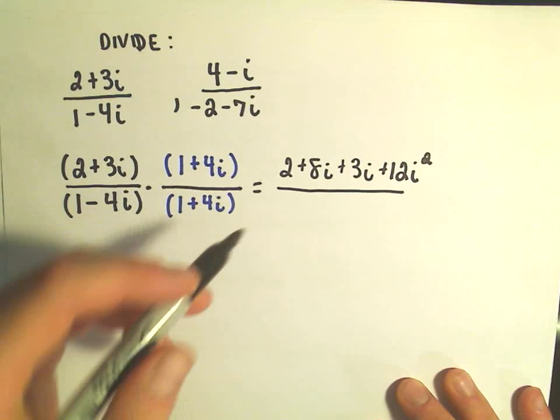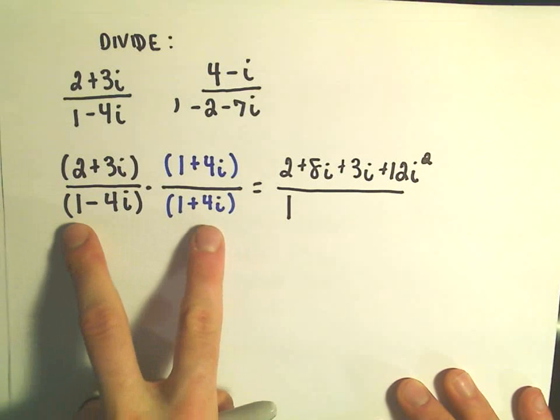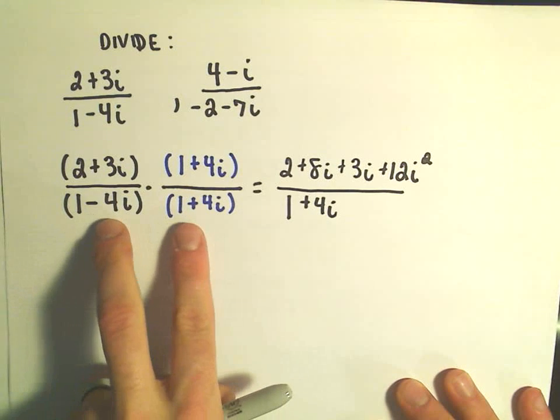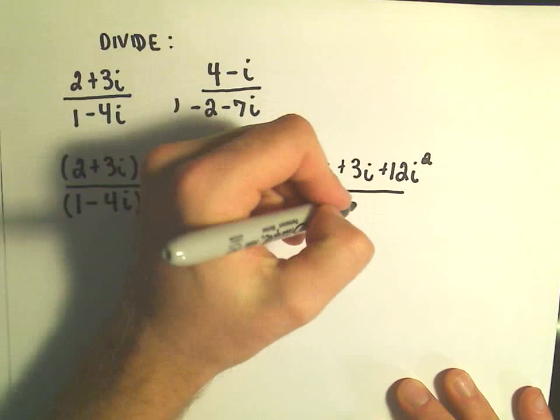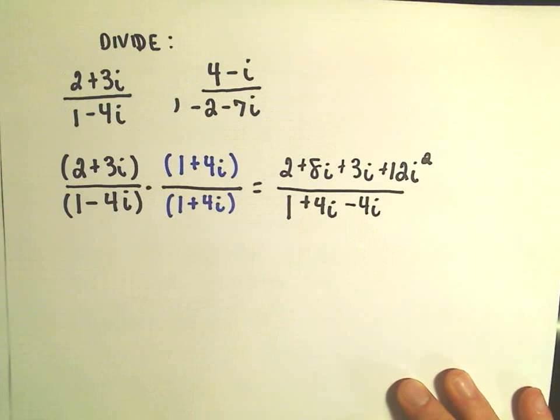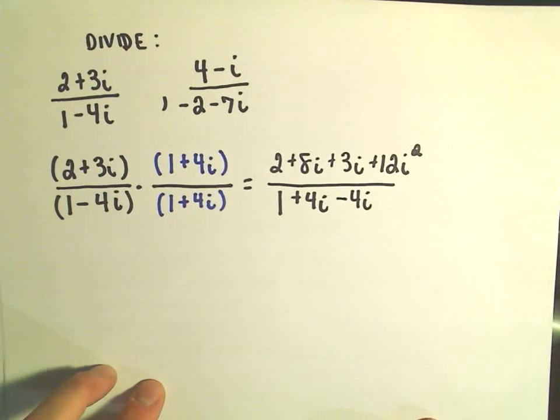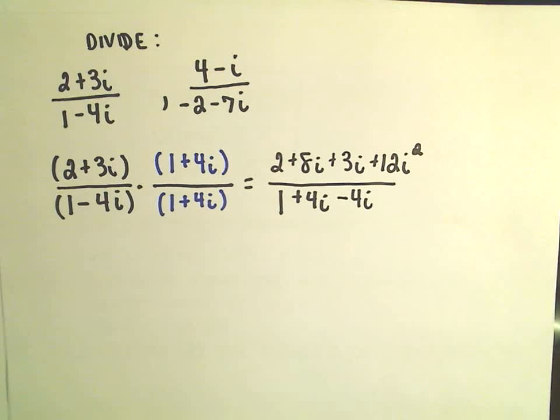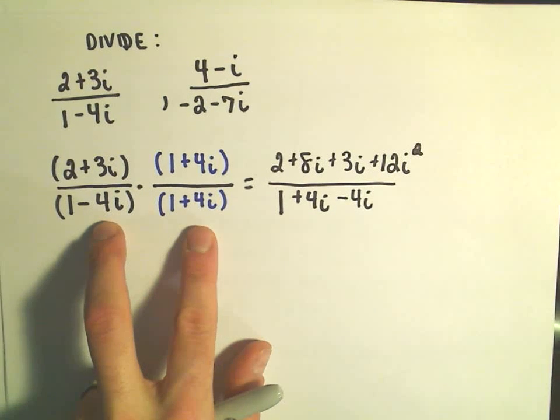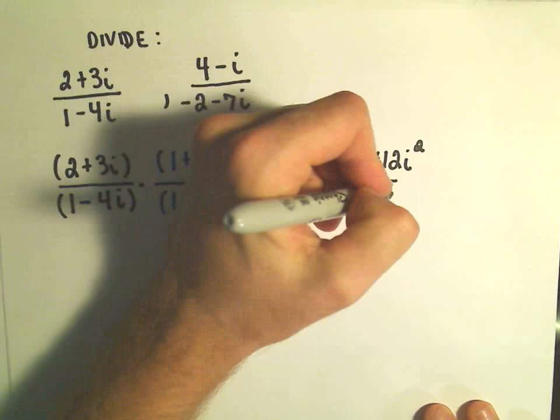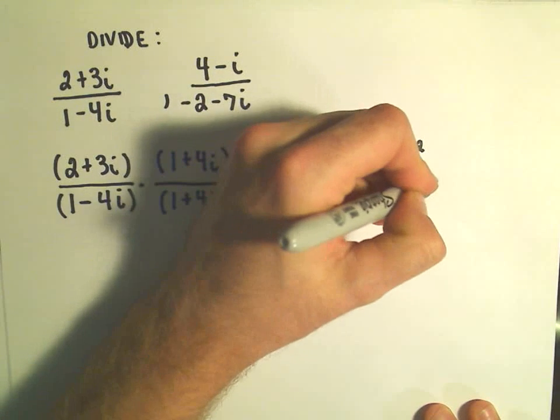In the denominator, we'll have 1 times 1, which is 1. We have 1 plus 4i. Negative 4i times 1, which will be negative 4i. And I think once you do a few of these, you'll see that these cancel out. I don't even write it half the time. So the last term here, we have negative 4i times positive 4i. That's going to give us negative 16i squared.